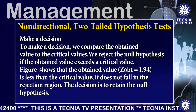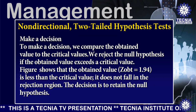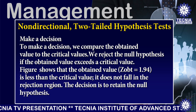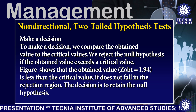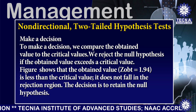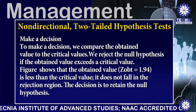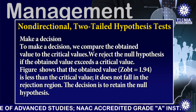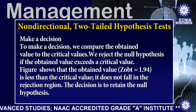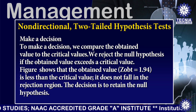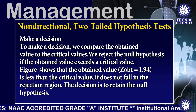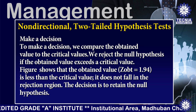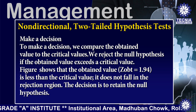Step 4 concerns making a decision. To make a decision, we compare the obtained value to the critical values. We reject the null hypothesis if the obtained value exceeds a critical value. The figure shows that Z obtained = 1.94 is less than the critical value of 1.96, so it does not fall in the rejection region. The decision is to retain the null hypothesis.